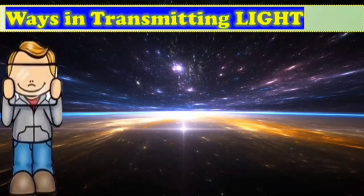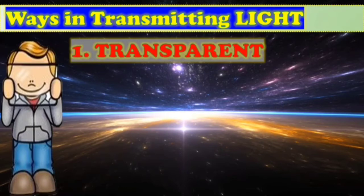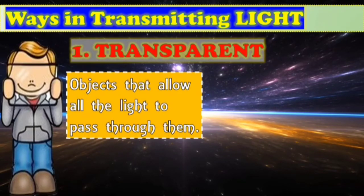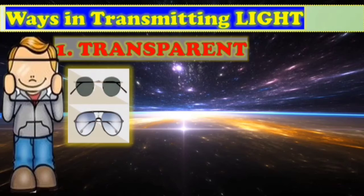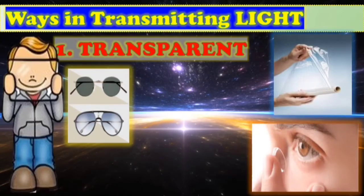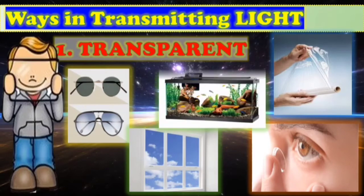Now let's move to the ways of transmitting light — how light interacts with certain objects or materials. Number one: transparent. Transparent objects allow all the light to pass through them. For example, when you shine a flashlight and the light passes completely through to the other side — that is transparent. In other words, we can clearly see through them. Examples of transparent materials include spectacles or sunglasses, cellophane, contact lenses, clear windows, and aquariums.